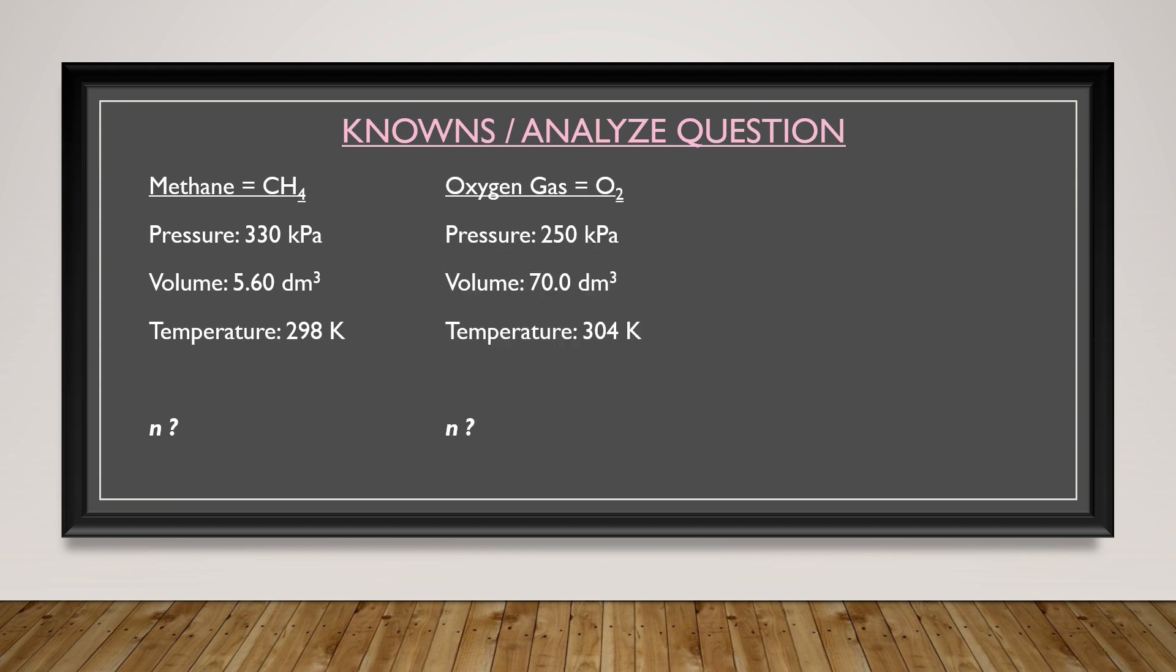Next is the oxygen gas, which has a pressure of 250 kilopascals, a volume of 70.0 decimeter cubed, and a temperature of 304 kelvin.